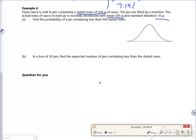Right then, so the normally distributed bit is what we want for the distribution. So X follows a normal distribution N(505, 10²). And I want the probability that it contains less than the stated mass, which is 500. So I want the probability that X is less than 500. In terms of my picture, my mean is 505 and I want less than 500.